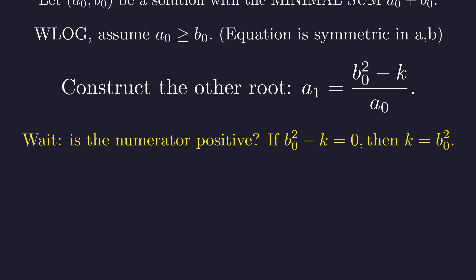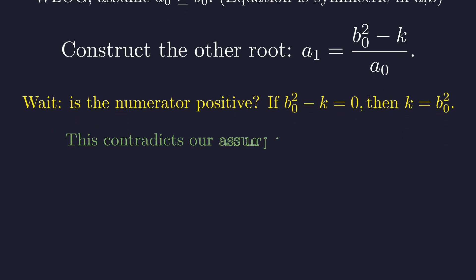For a1 to be positive, the numerator must be positive. What if it's zero? If b0 squared minus k were zero, then k would be a perfect square. This contradicts our assumption that k is not a perfect square. Therefore, the numerator is strictly positive, and so a1 is a positive integer.